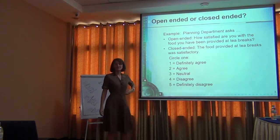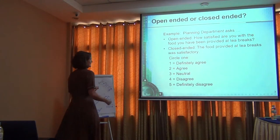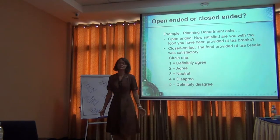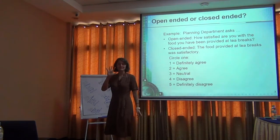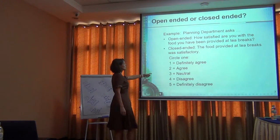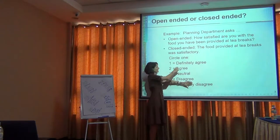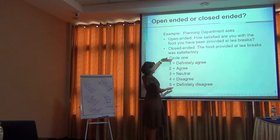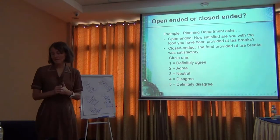A closed-ended question gives no opportunity to write anything — you check or circle a choice. For example: 'The food provided at tea breaks was satisfactory.' Do you definitely agree, agree, feel neutral, disagree, or definitely disagree? This is called a five-point Likert scale. It's important to always have a neutral choice and a balanced set of answers — you wouldn't put two positive options, one neutral, and one negative, because people tend to pick the middle. Answer sets must be balanced with a middle category.